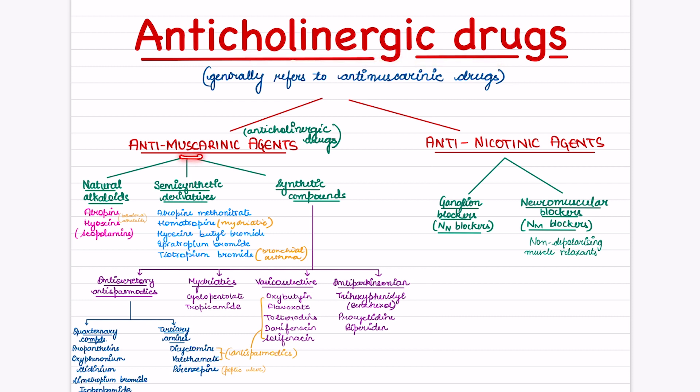Anti-muscarinic agents are further of three types: natural alkaloids, semi-synthetic derivatives, and synthetic compounds. These synthetic compounds we'll see later in the video. In natural alkaloids we have atropine and hyoscine. Hyoscine is also known as scopolamine. In semi-synthetic derivatives we have atropine methonitrate, homatropine, hyoscine butyl bromide, ipratropium bromide, and tiotropium bromide.